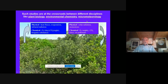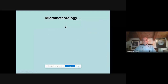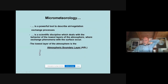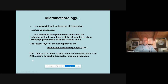What's interesting is that we are at the crossroads between different disciplines like plant biology, bio-mental chemistry, and micro-meteorology. We will focus mainly on micro-meteorology because it's a very powerful tool to describe air-vegetation exchange processes. It is a scientific discipline which deals with the behavior of the lowest layer of the atmosphere where exchange phenomena with the surface occur. The lowest layer is the atmospheric boundary layer. The transport of physical and chemical variables across the ABL occurs through micro-meteorological processes.